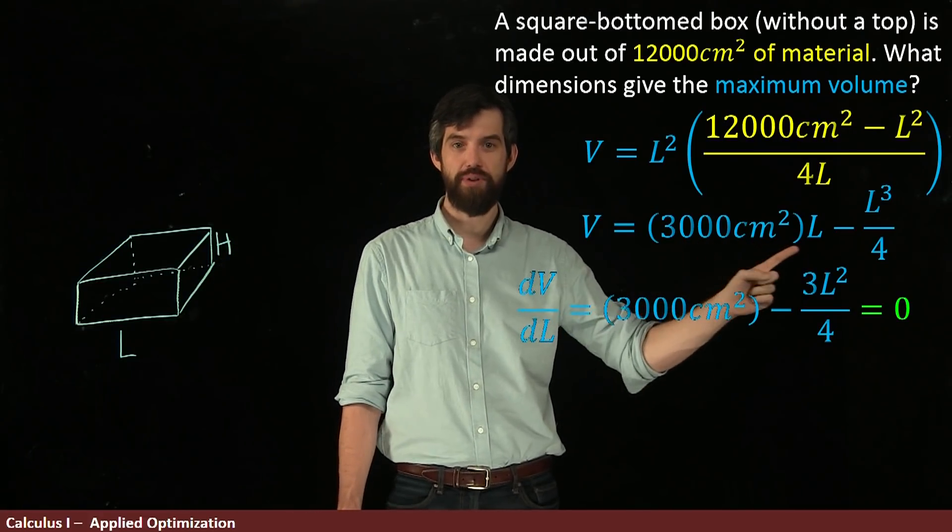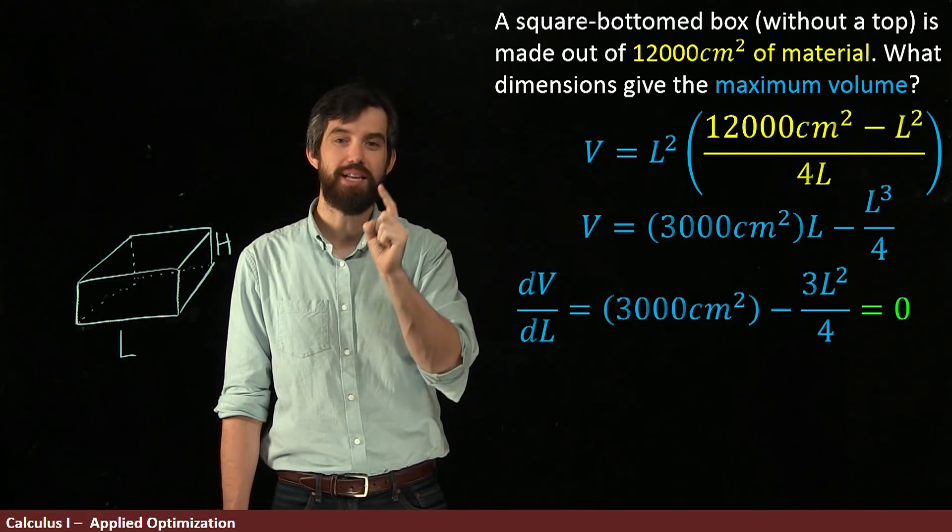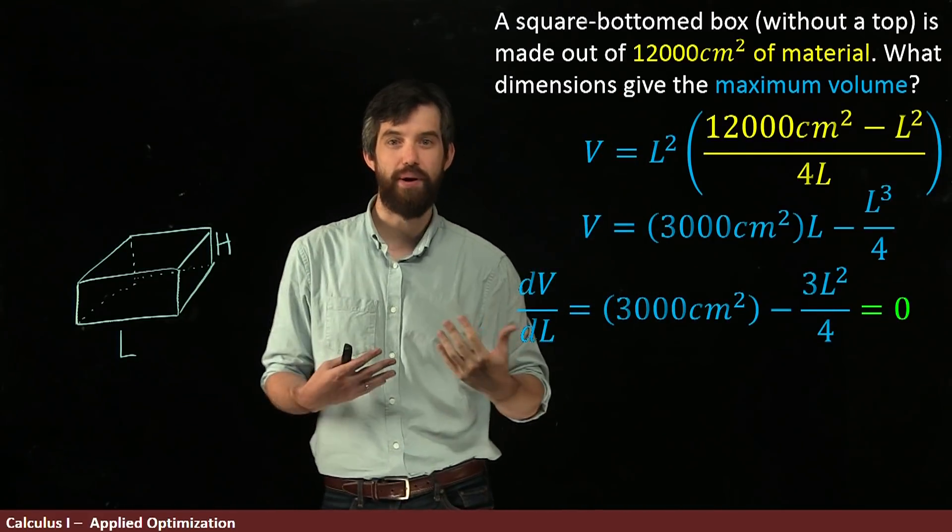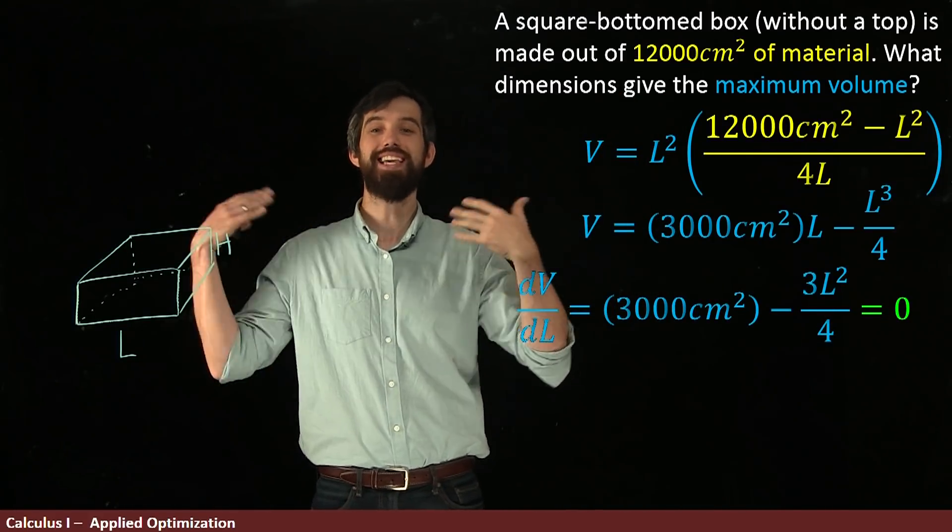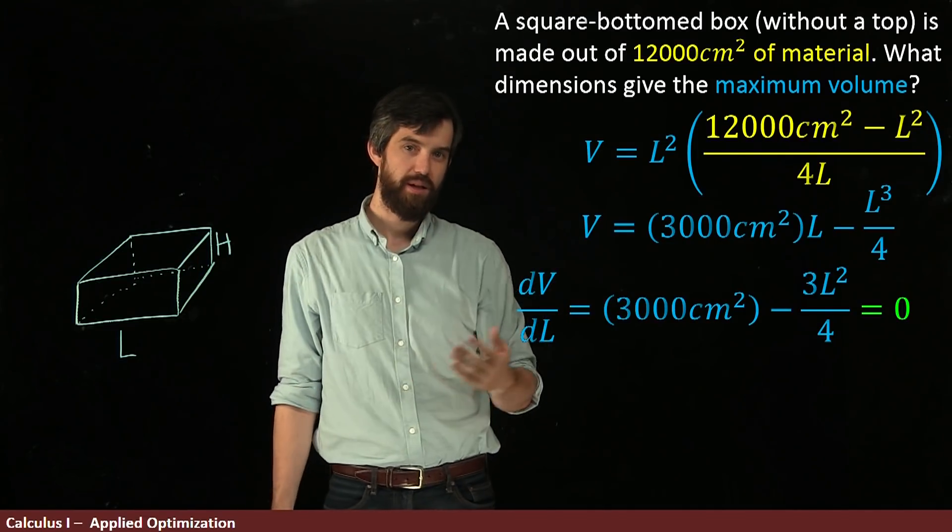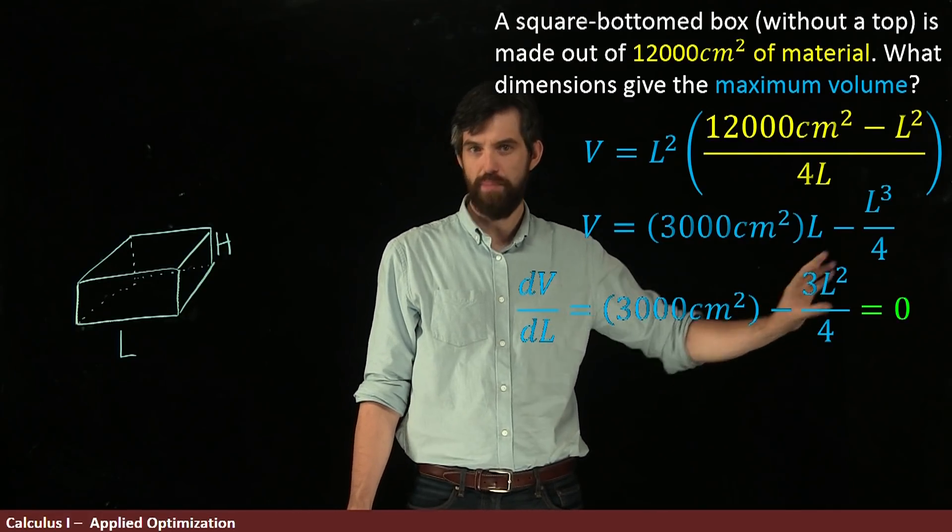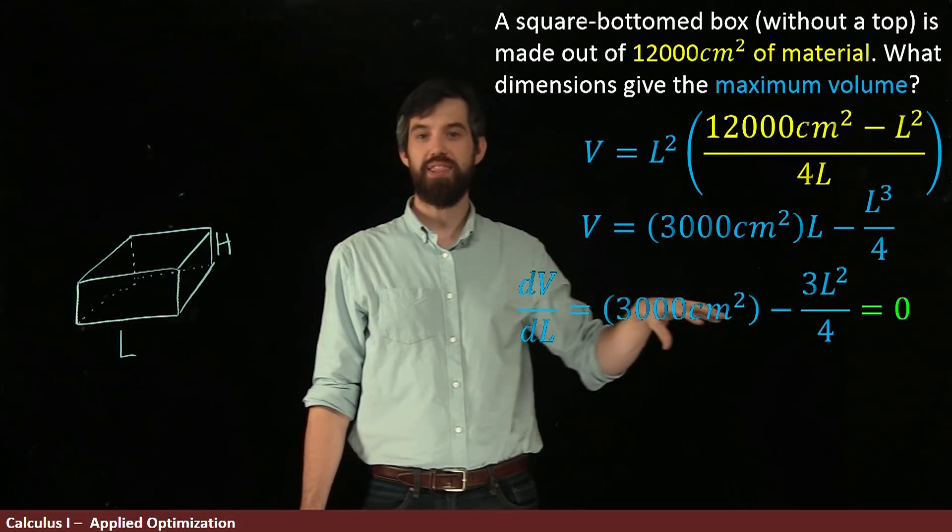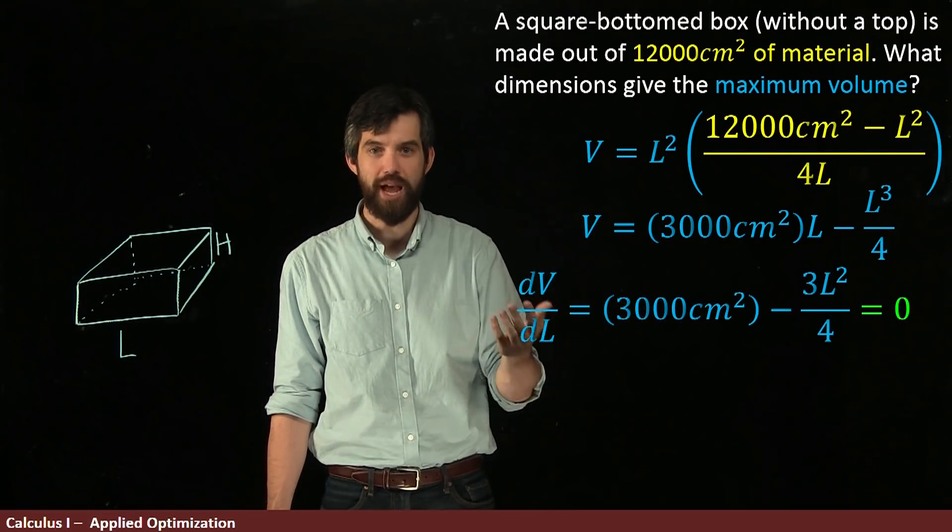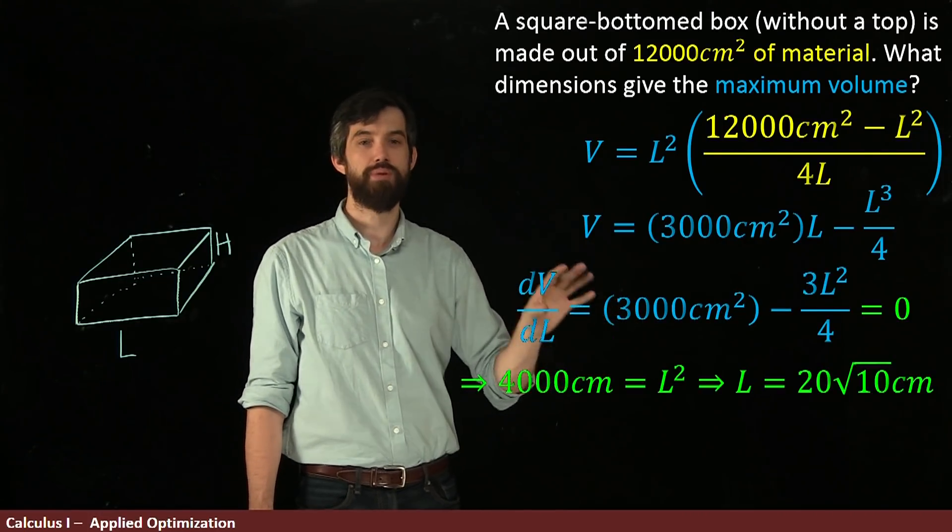So this derivative is the derivative of volume with respect to length is, okay, 3000. The L goes down to a 1. L cubed goes to 3L squared. And what I'm doing is I'm setting this equal to zero. I want to find the critical number. I want to figure out where a candidate to be a max or a minimum is. All right. A relatively straightforward equation. This is just a quadratic. I can take the 3L squared and move it to the other side. Take the 3000, multiply it by 4, divide it by 3, square root. And what do I get? I get that L is 20 root 10 centimeters.